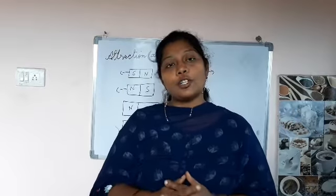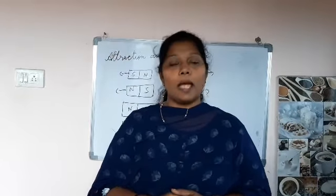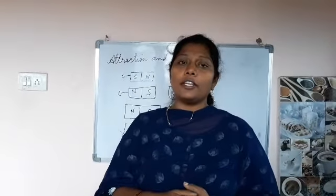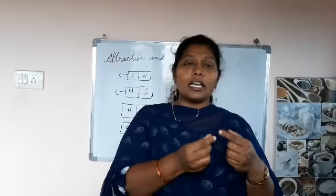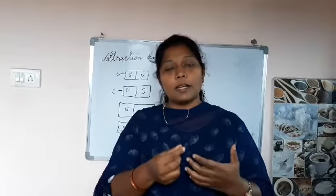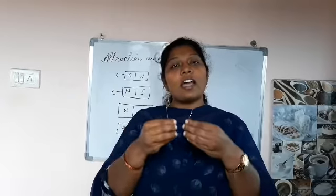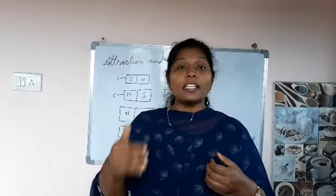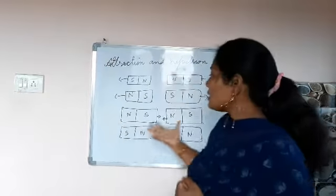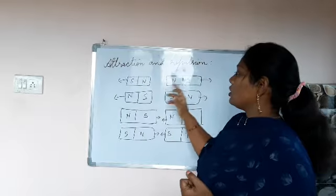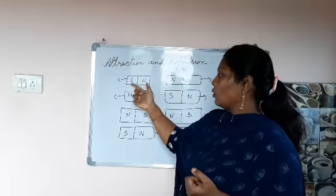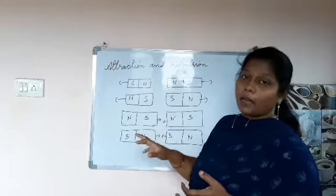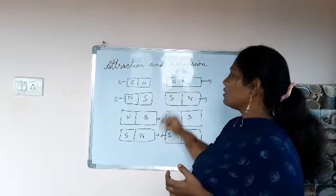This attraction and repulsion property is also shown by magnets. In an earlier video, when a magnet is brought close to any metallic material, it attracts that material — the magnet has an attractive capacity. Now on the board: I placed a bar magnet facing north and south, and opposite to it, another bar magnet also facing north and south.